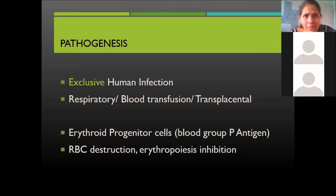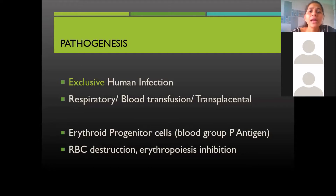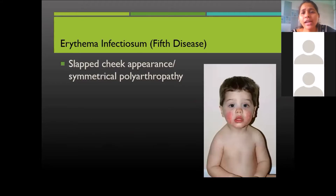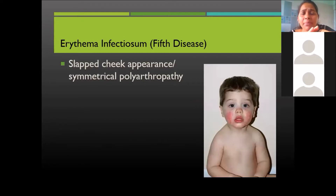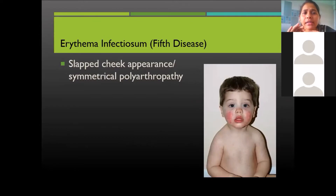This leads to premature RBC destruction and erythropoiesis inhibition, which is why the genus is called Erythrovirus. The important pathogenicity here is called Fifth Disease, also known as Erythema Infectiosum. A child presents with a slapped cheek appearance and a coalescent rash on both cheeks. If Parvovirus causes infection in adults, it leads to symmetrical polyarthropathy — joint involvement.